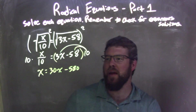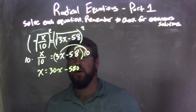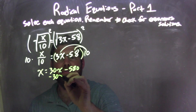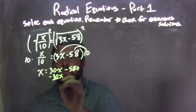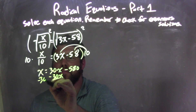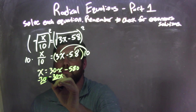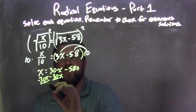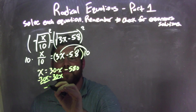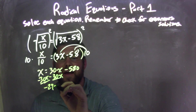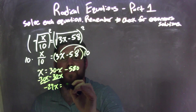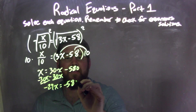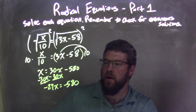Now let's get all the x's together. I'm going to subtract 30x from both sides: x minus 30x is negative 29x, equals negative 580.